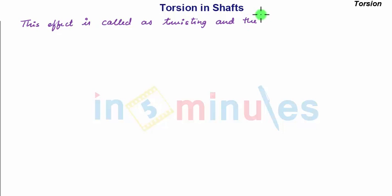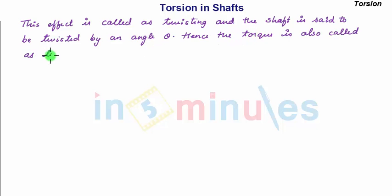So this effect is called twisting, and the shaft is said to be twisted by an angle theta. Hence the torque is also called twisting moment.